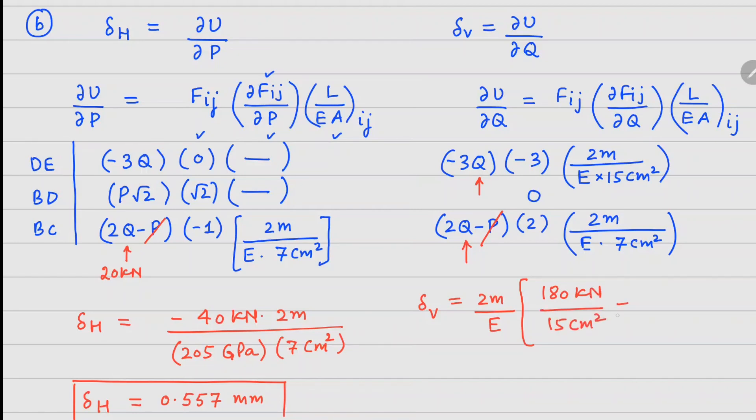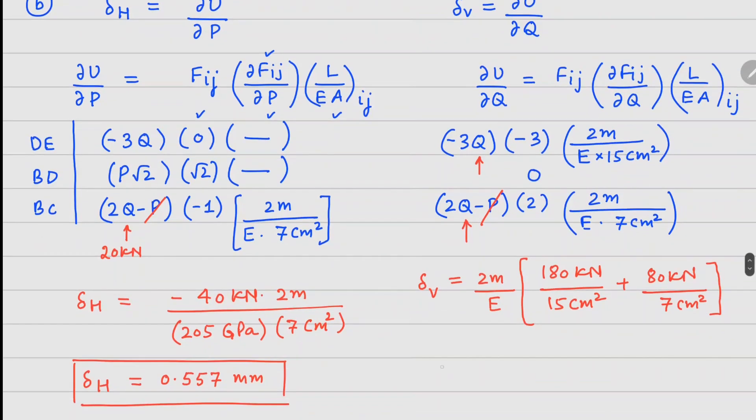From the second term, we have 80 kilonewtons divided by 7 centimeter square. If I do this calculation, the value of delta V is 2.286 millimeters.